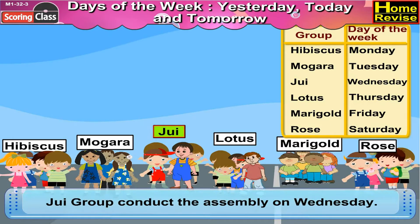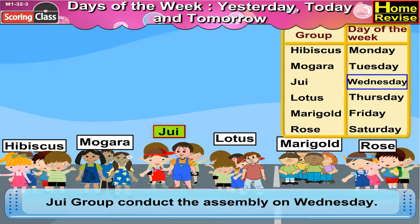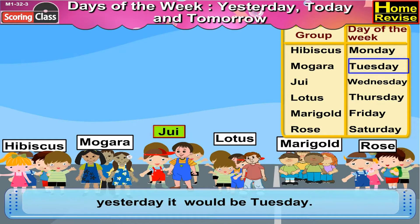Let's see the table. The Zui group will conduct the assembly on Wednesday. That means today is Wednesday, so yesterday it would be — correct — Tuesday!